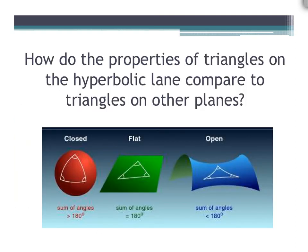Spherical triangles lie on a finite plane with curvature and have an angle sum range of 180 to 540 degrees. Triangles on the Euclidean plane have no curvature and have angle sums of exactly 180 degrees. Hyperbolic triangles, in comparison, lie on an infinite plane that also has curvature; therefore, these triangles will always have angle sums less than 180 degrees and can approach zero degrees as they extend infinitely.